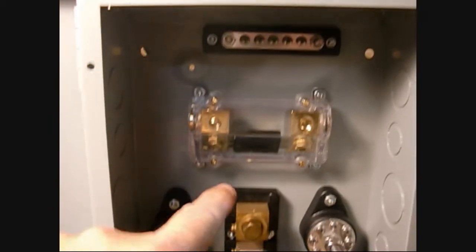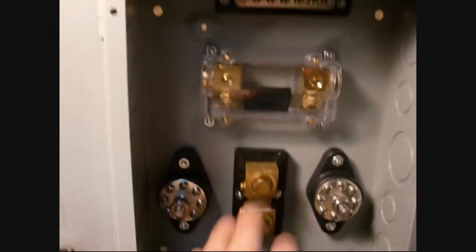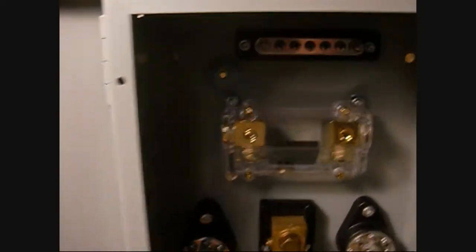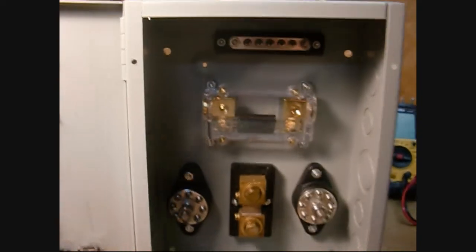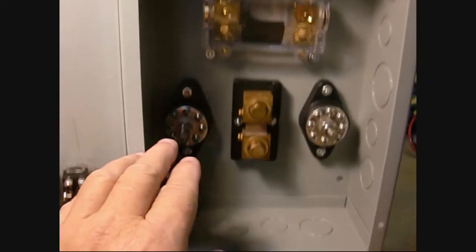There's a fuse holder, positive bar, positive post, negative post, and the shunt. The idea is we're going to bring the PV wires in.